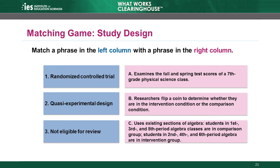That means the last option in the left column matches to choice A: examines the fall and spring test scores of the seventh grade physical science class. This is an ineligible design because there is no comparison group. The seventh grade science class represents one group. The study looks at that same group before and after the intervention, which researchers call a pre-post design. Scores might go up for many reasons not related to the intervention. These kinds of pre-post designs with no comparison group are not eligible for review under the WWC group design standards.